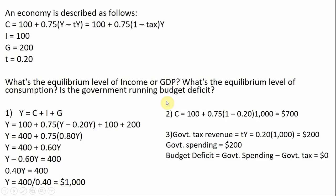Moving on to step two, finding the equilibrium level of consumption. We're going to evaluate our consumption function when Y equals 1,000. Writing the consumption function and plugging in 1,000 for Y — using the form 100 plus 0.75 times (1 minus the tax), where the tax is 0.2 — this simplifies to $700. So the equilibrium level of consumption is $700.